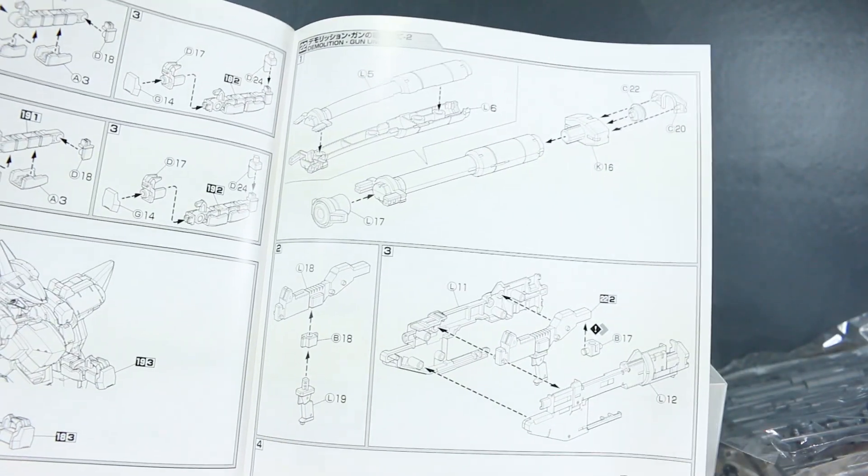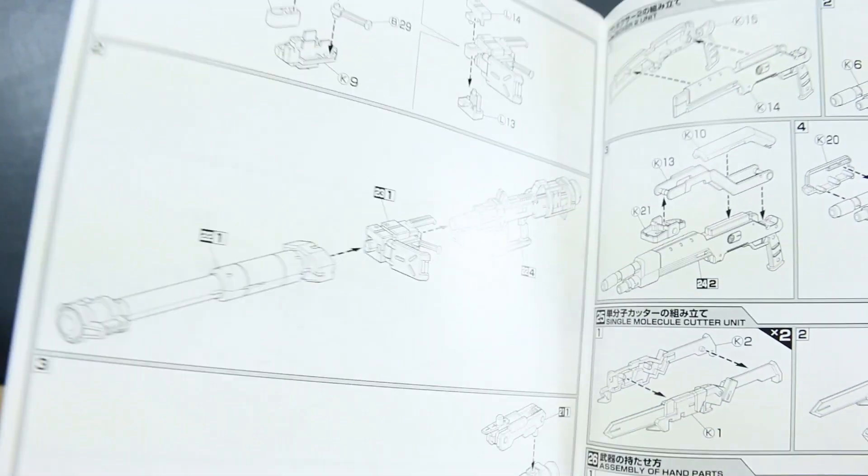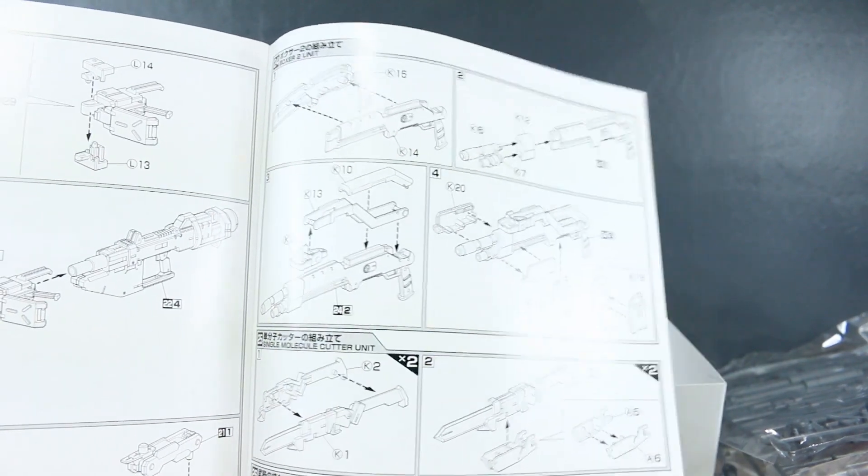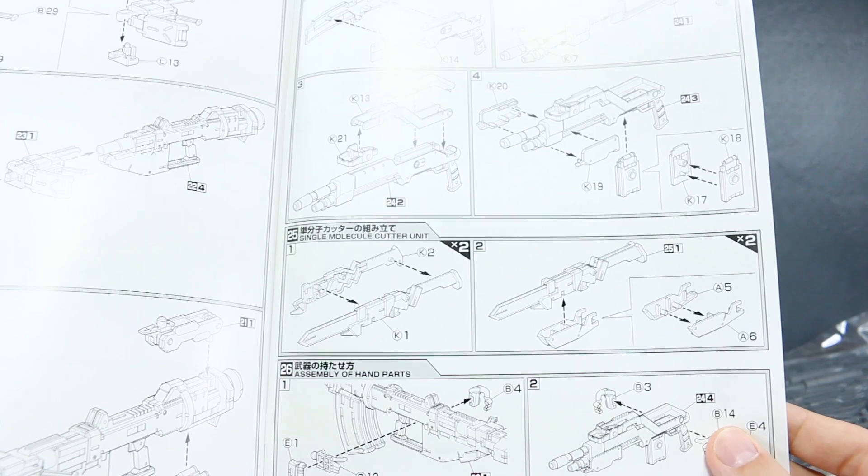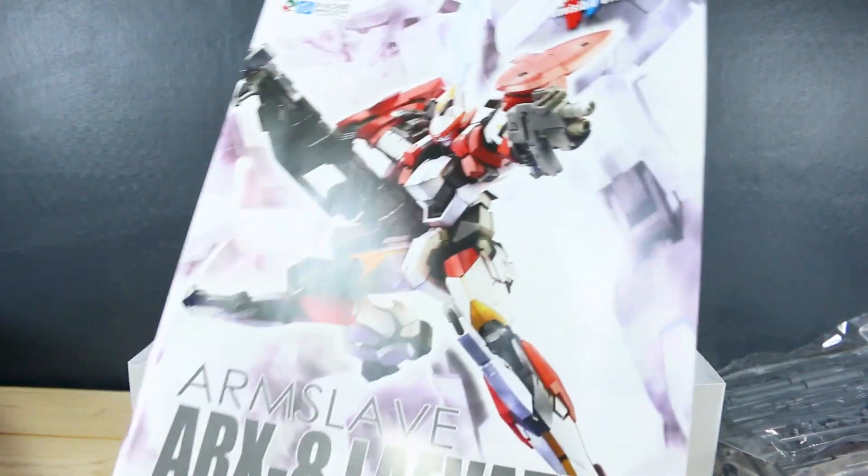And then the big demolition gun. There you go. That's what it's called. The big gun, the demolition gun there. And then the boxer unit, which is the shotgun and the singular molecule cutter unit, single molecule cutter units. And then there's the hands, how to hold all the weapons and everything. So that's it. Let's get a look at the runners.